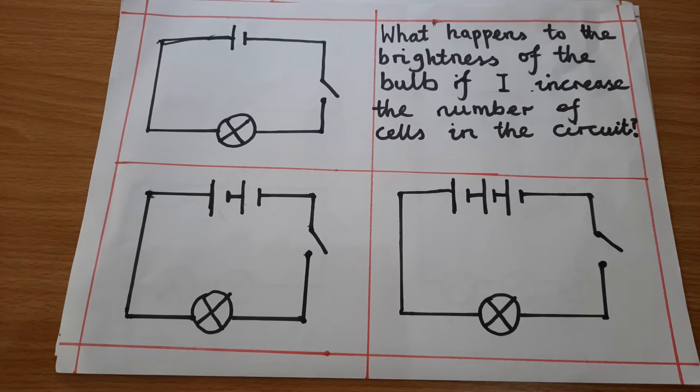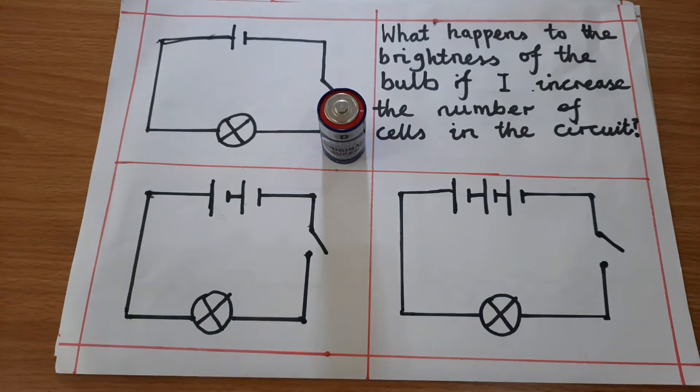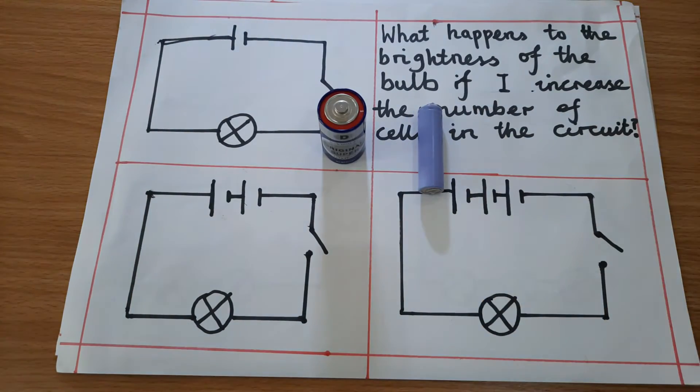From this investigation, you can see that the question says, what happens to the brightness of the bulb if I increase the number of cells in the circuits? This tells me that I will be changing the number of cells, and without doubt, that's my independent variable. What would I be measuring will be the brightness of the bulb.